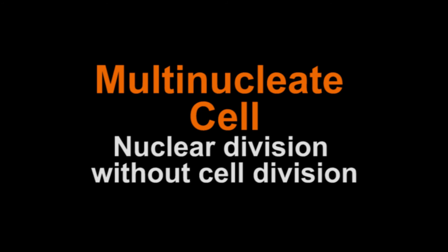What happens if the nucleus divides without the cell dividing? If nuclear division occurs without cell division, a cell with many nuclei, called a multinucleate cell, is formed. Multinucleate cells are sometimes found in plant seeds and in algae.